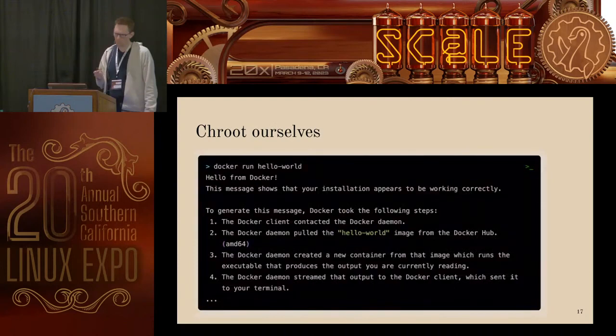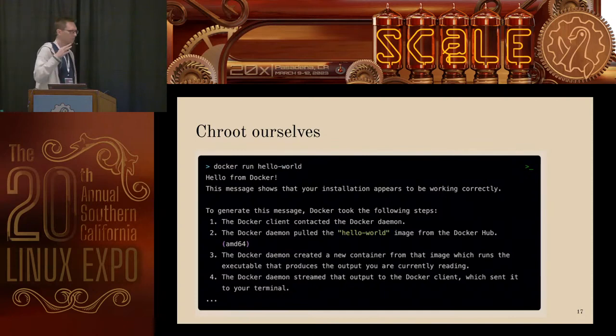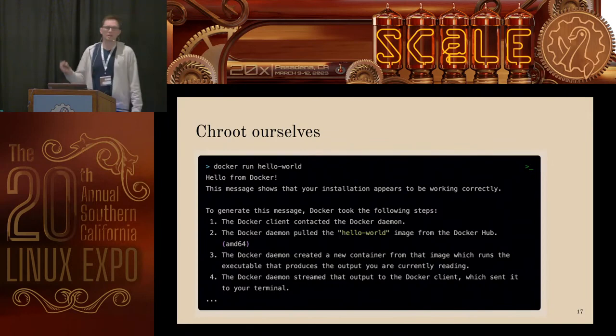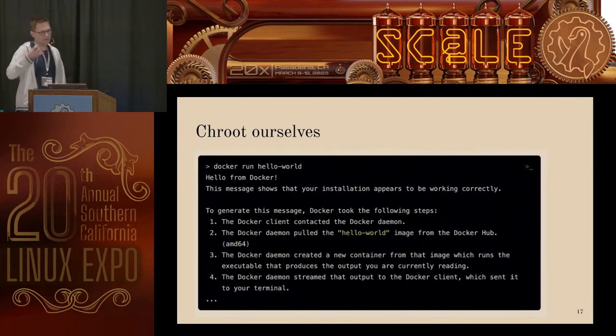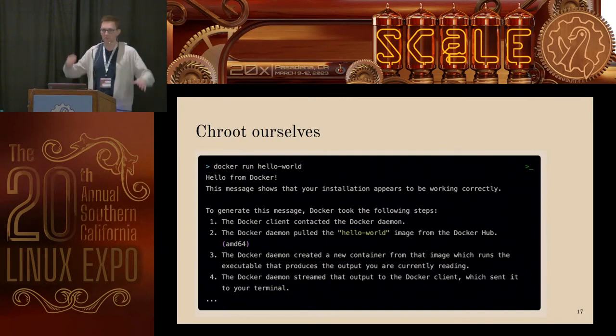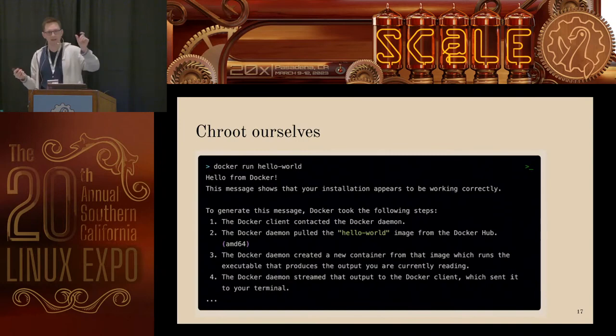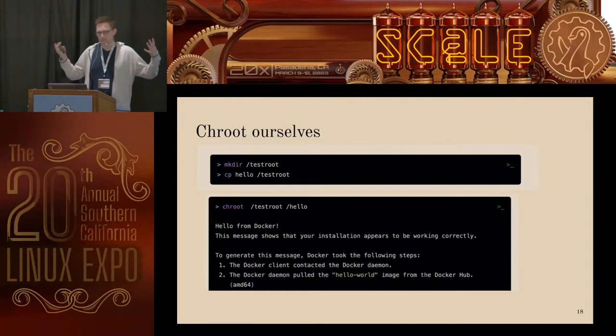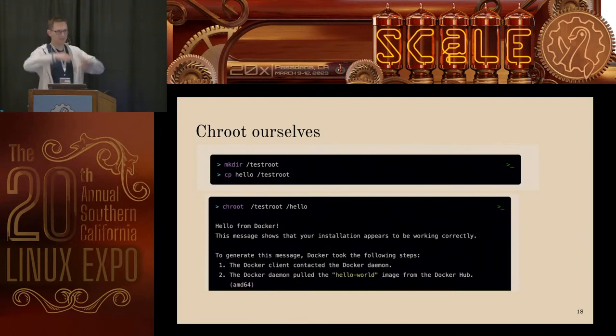So we can use this. Can we build our own Docker runtime just using this syscall? Could we travel back in time to Unix V7 and build a container infrastructure? The simplest thing I can do with Docker is docker run hello-world — it prints out a message. If you look inside the image that's running, it just contains a statically linked executable. We can do the same thing just using chroot: make a test directory, copy in our hello program, and when we run that we get the same message — 'hello from Docker.' A very simple container that runs our hello world.